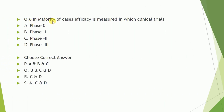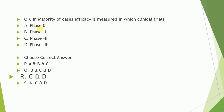Question number six: in majority of cases, efficacy is measured in which clinical trial? Again, all of these options are given. The correct answer is C and D — phase two and phase three.